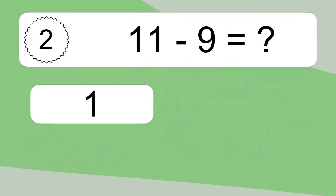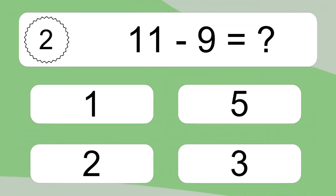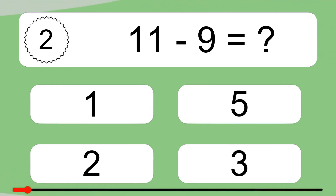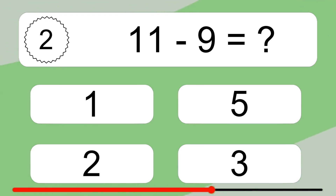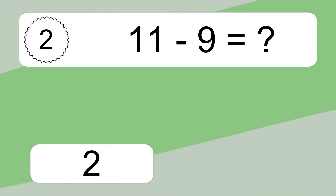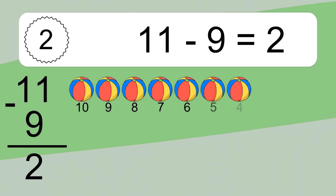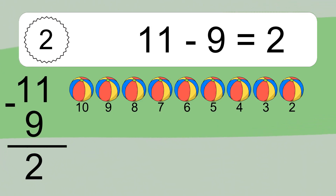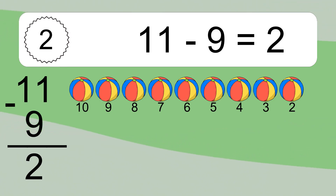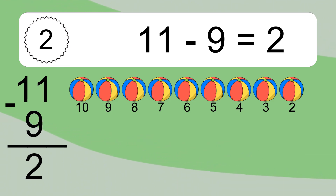11 minus 9 equals what? 11 minus 9 equals 2. Let's count it: 10, 9, 8, 7, 6, 5, 4, 3, 2.